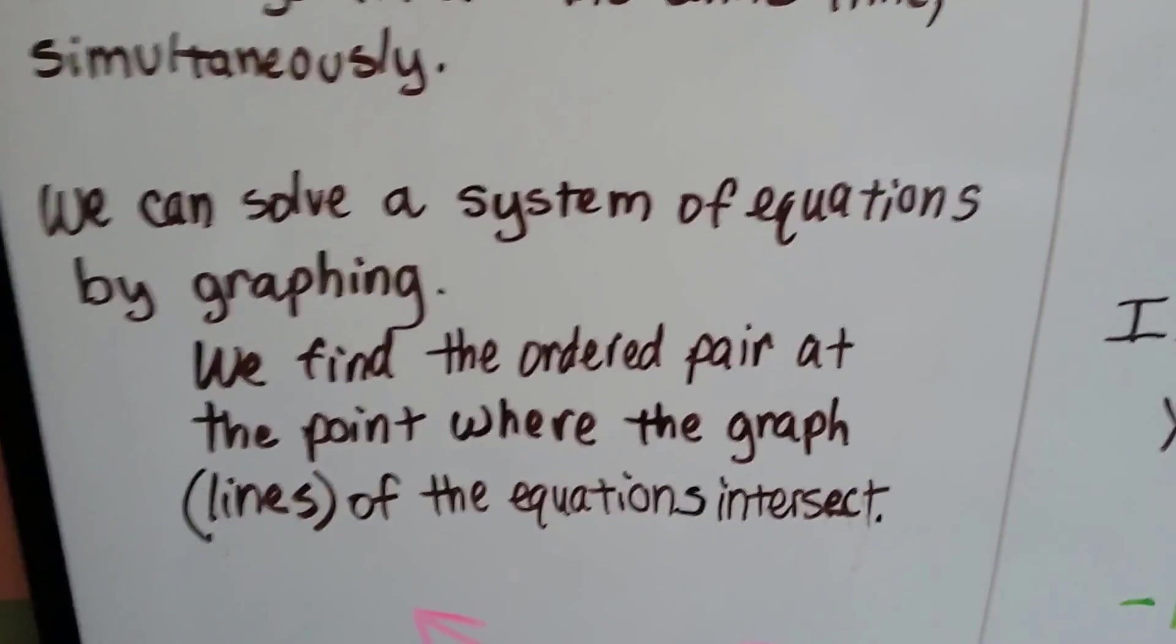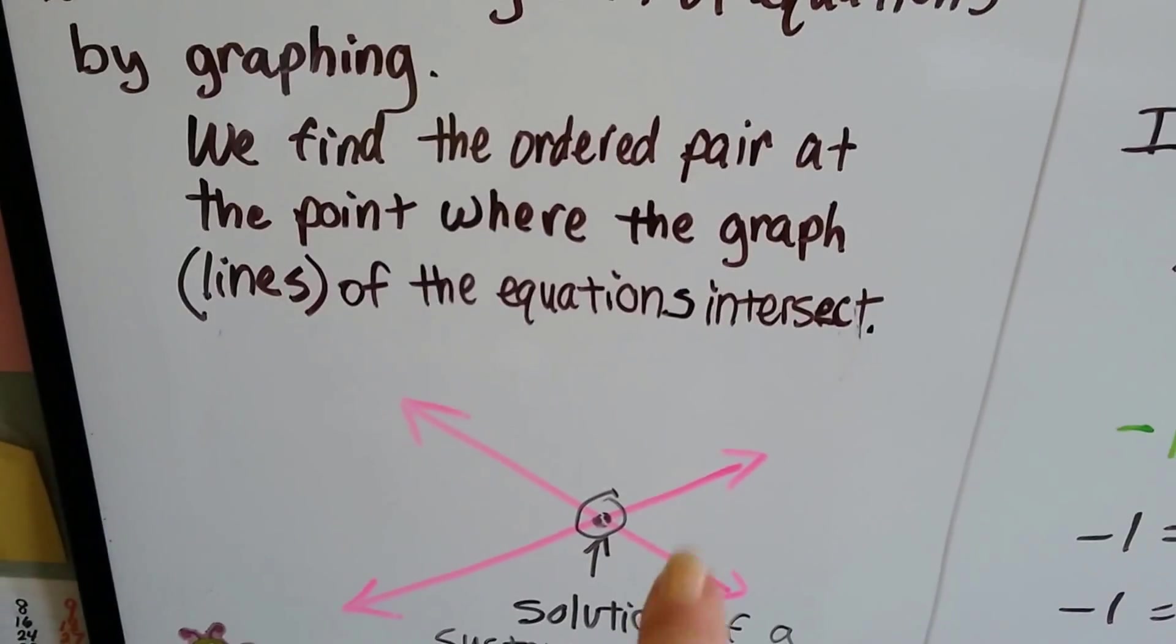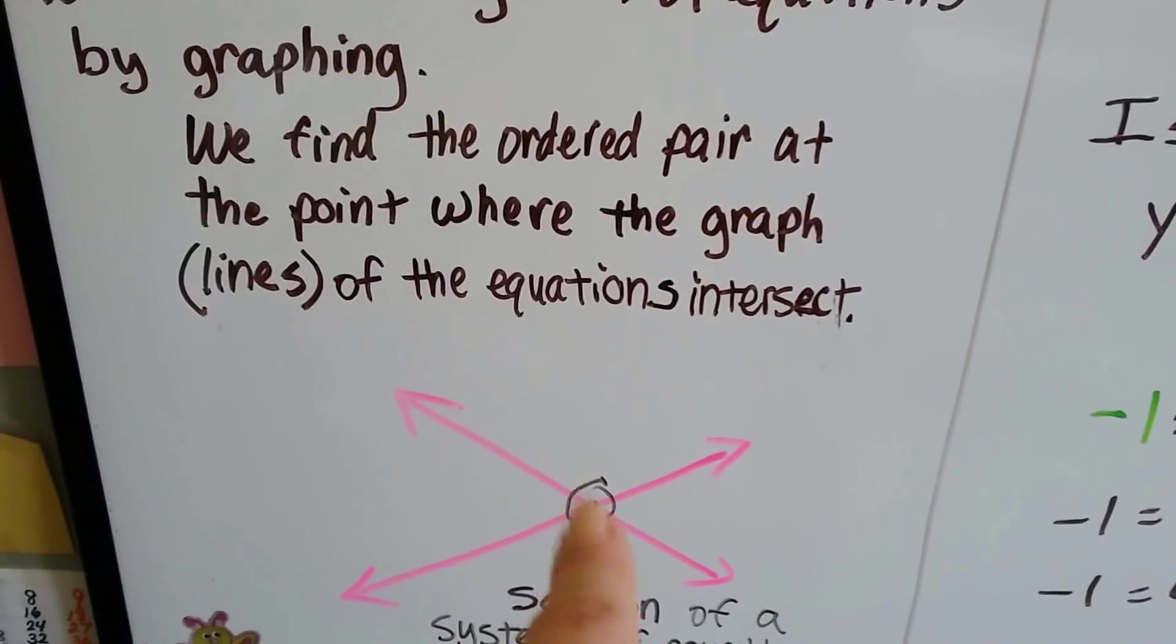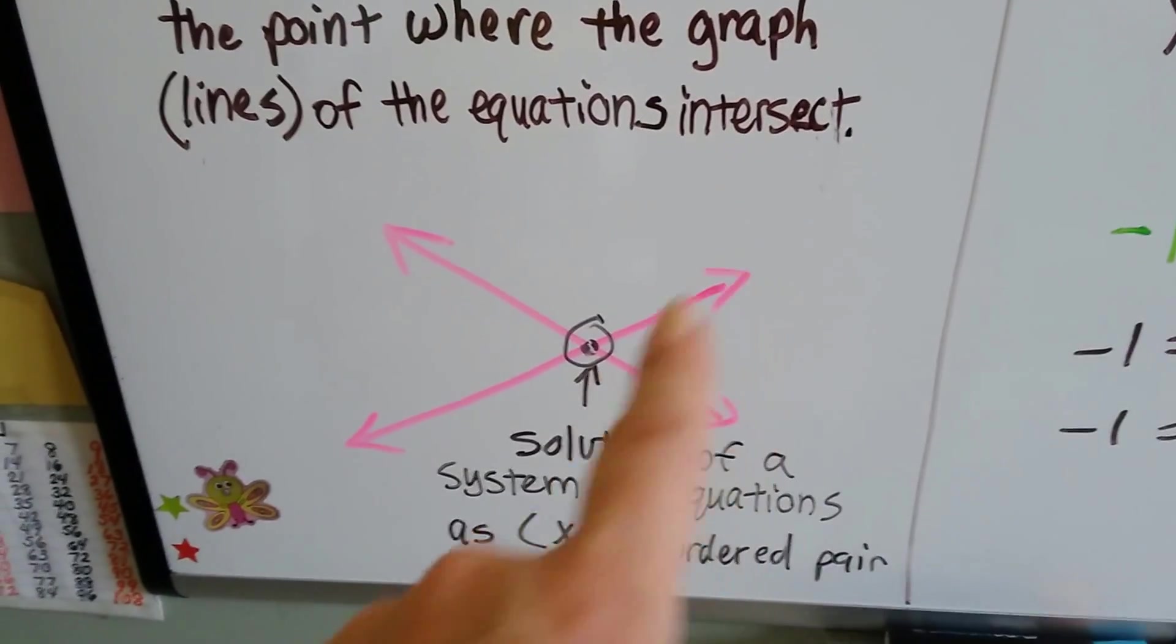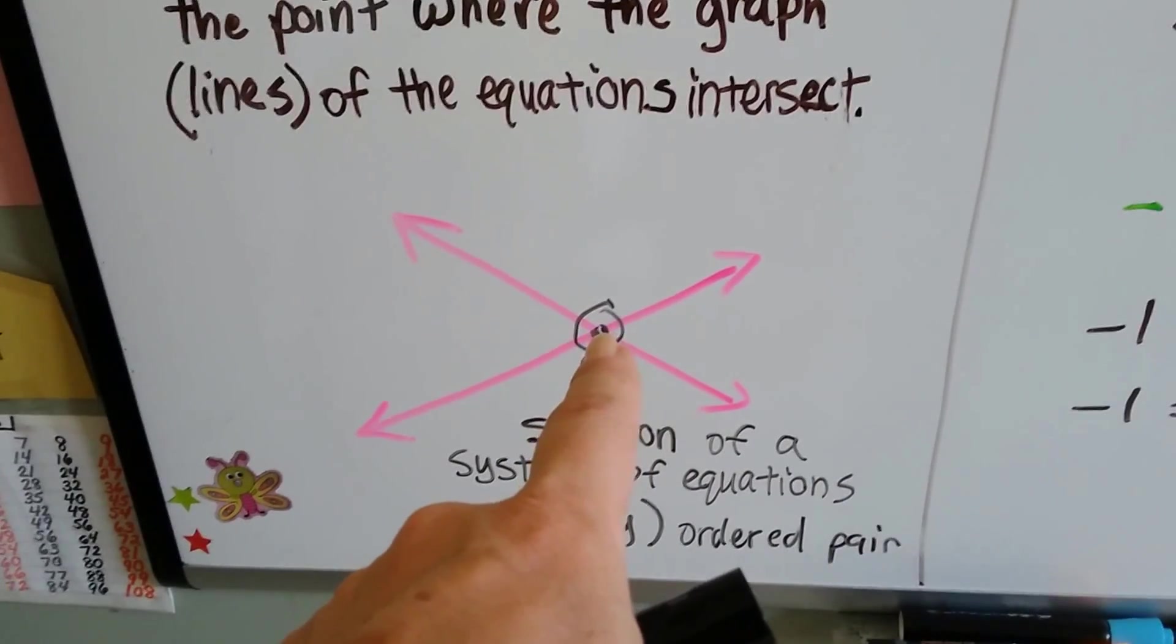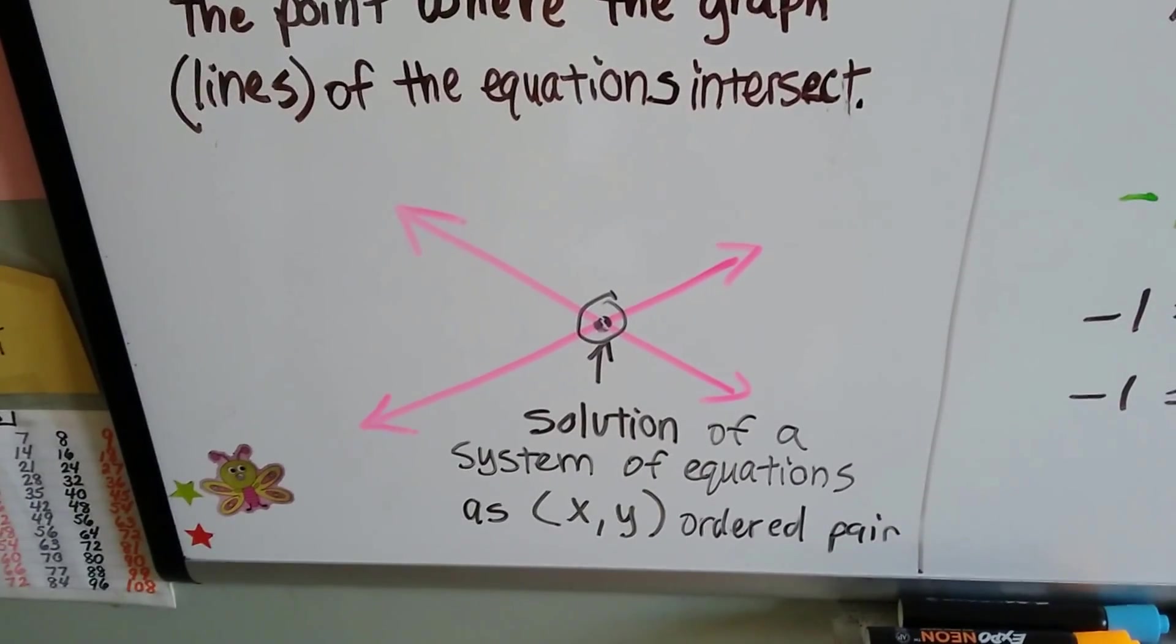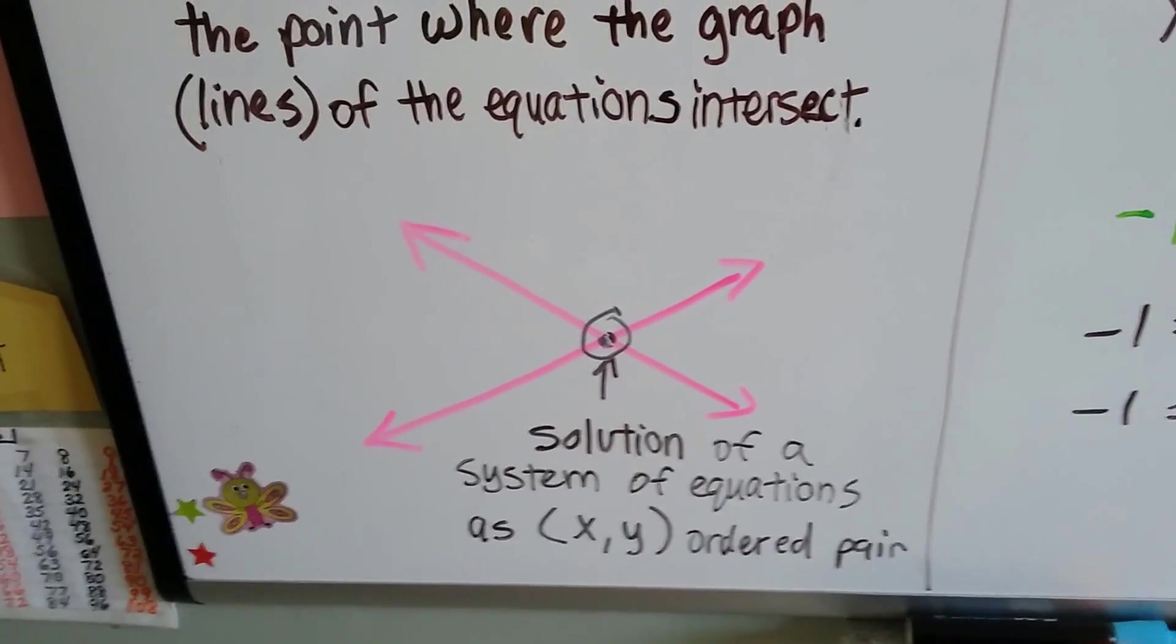We can solve a system of equations by graphing. We find the ordered pair at the point where the graph, the lines intersect, just like this. Where this line and this line intersect, that point right there where they crisscross, that's the solution of the system of equations. It's x and y as an ordered pair. That's our solution.